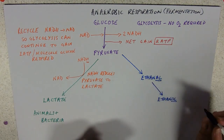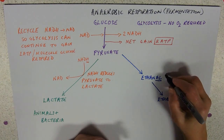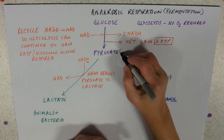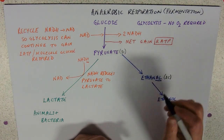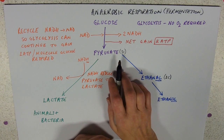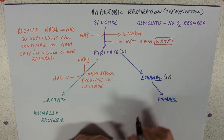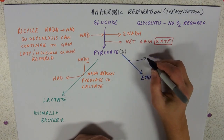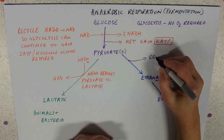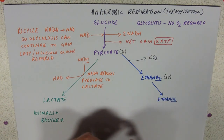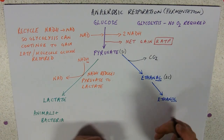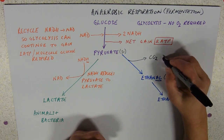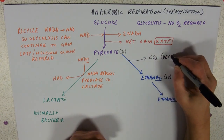As the chemists amongst us will know, ethanal is a two-carbon compound, and of course we know that pyruvate is a three-carbon compound. Wherever we're going in respiration reactions from three carbons to two carbons, the enzyme that does that is decarboxylase. So here we're going to make some carbon dioxide as an end product — that's a decarboxylation reaction.